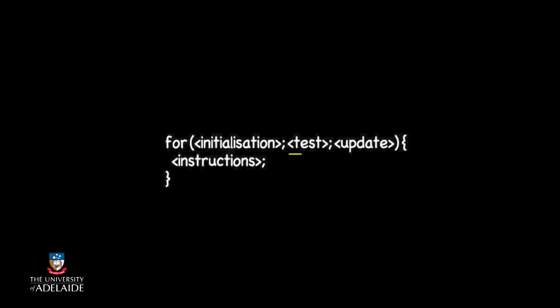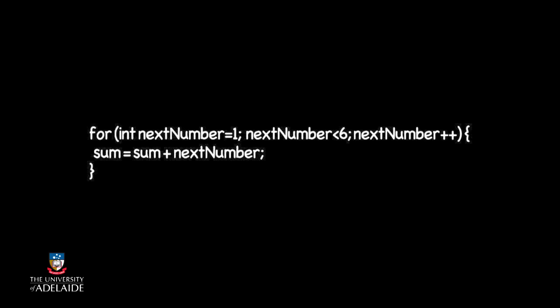The test is where we write the expression that tells us whether we need to repeat the instructions. In this case, it is whether we have added all of the numbers in our sequence. Or more precisely, whether the next number in the sequence to be added is less than 6. If it is, then we repeat the instructions. But if it isn't, we go to the instructions that follow our for-loop structure.